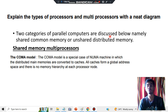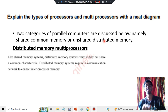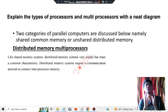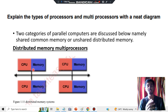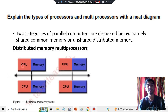Moving on to distributed memory: in distributed memory, memory is distributed among many segments. It is similar to shared memory, but the key difference is that systems here require communication to connect with each other — inter-processor communication is needed. There will be a separate CPU for each memory, and CPUs and memories are connected together. Each processor has its own local memory which it accesses independently.